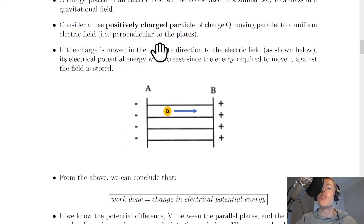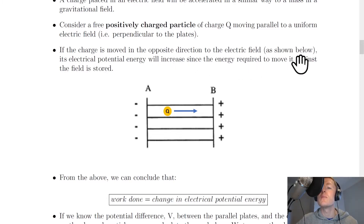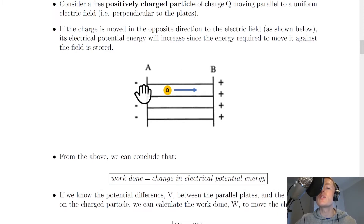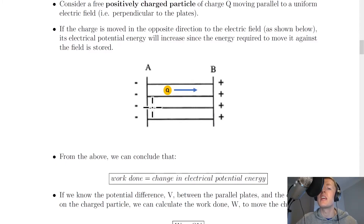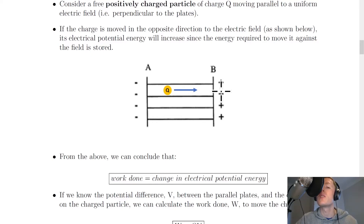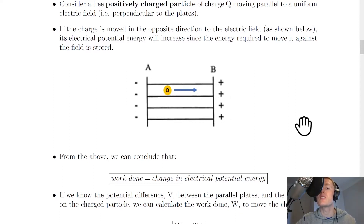If the charge is moved in the opposite direction to the electric field, its electrical potential energy will increase since the energy required to move it against the field is stored. For two charged parallel plates, the electric field lines go from positive to negative, so the field lines point to the left in this case. If we take our positive charge Q and move it towards the positive plate, the repulsion force increases because they're both positively charged. This energy is stored as we move the charge to the right.